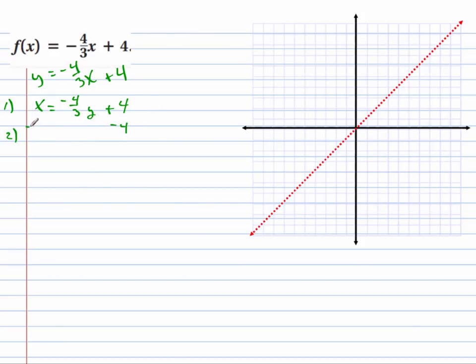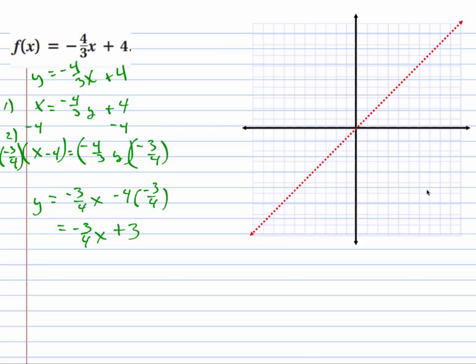The second step is you solve for y. So I'm going to subtract 4 from both sides. So x minus 4 is minus 4 thirds y. To get rid of the minus 4 thirds, I'm going to multiply by minus 3 fourths on both sides. So y is minus 3 fourths x. I'm going to distribute this. So this is minus 4 times minus 3 over 4, which is minus 3 fourths x plus 3. The last step is to replace the y with f inverse. So the inverse here, f inverse of x is equal to minus 3 over 4x plus 3.